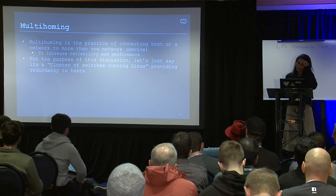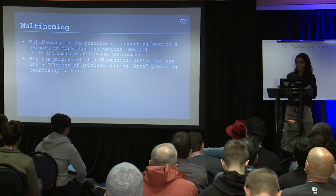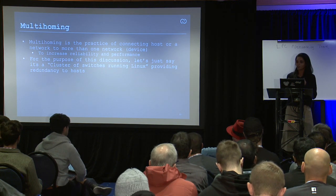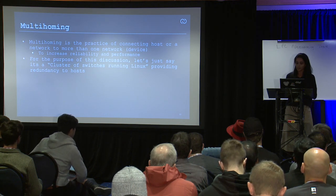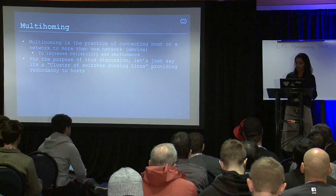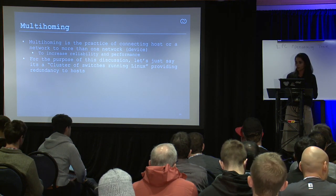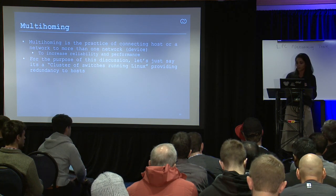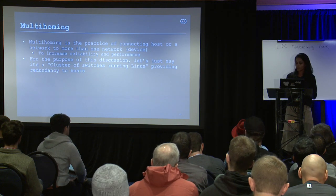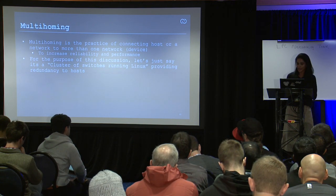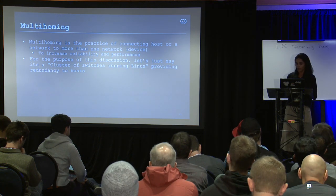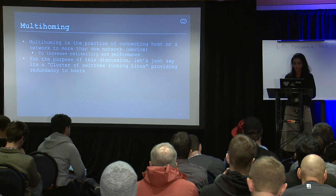Multi-homing from the host side: you bond NICs and connect to two switches. There's critical software running on switches — a cluster of switches running Linux — that maintains distributed network state about all hosts they provide multi-homing paths to. If one link to one switch goes down, the other switch needs to redirect all traffic. This is usually a proprietary protocol; Cisco and Juniper have their own implementations. This is being standardized with BGP and EVPN.